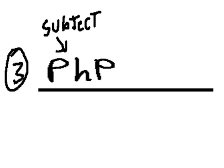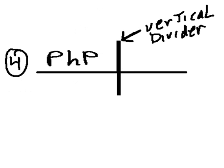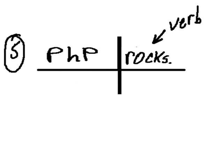PHP goes on the left-hand side of the baseline because PHP is the subject. Then I run a vertical divider right through the baseline, and to the right of the vertical divider I place the verb: rocks.